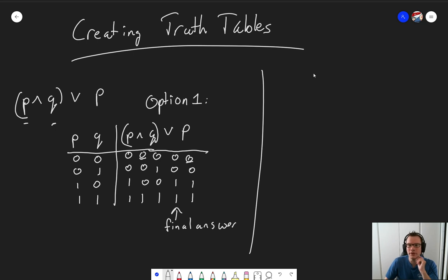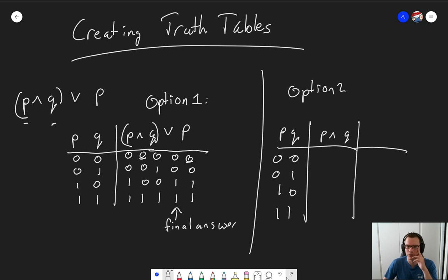Now, this is one way to do it. The other way to do it starts the same. So we have our input P and Q with the four different options. But now we split our formula. So the first thing we do is we say, OK, this P and Q, let's take a look at that thing first. So P and Q, that was 0, 0, 0, 1.